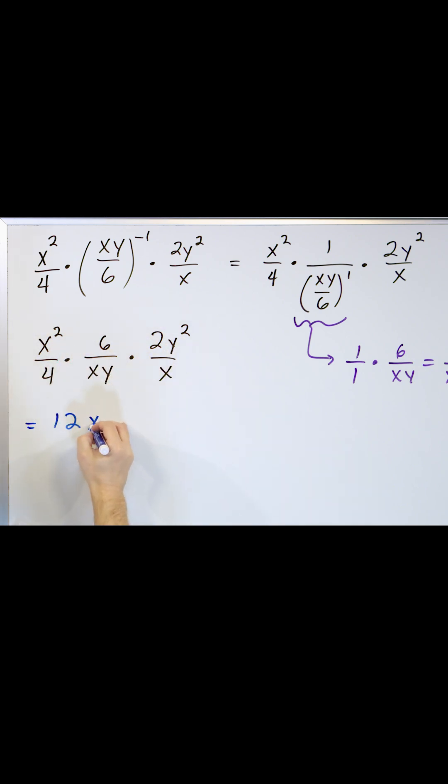x squared times y squared will give you x squared y squared on the bottom. Four, that's the only number. And then x times x is x squared, and then I have y, and then I can divide by four.